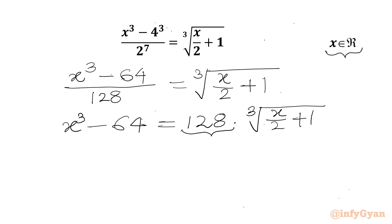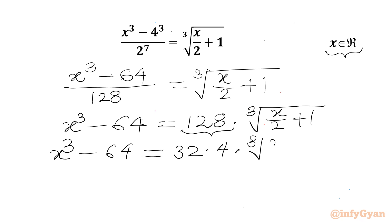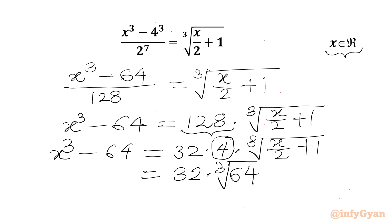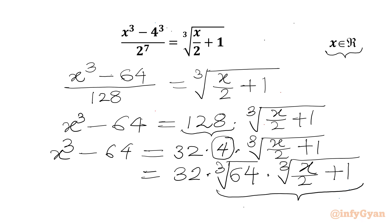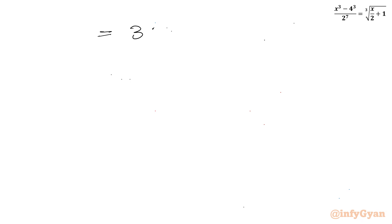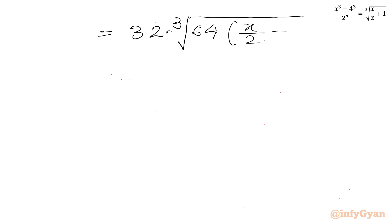Now we can factor. x cubed minus 64 stays as is. I can write 128 as 32 times 4, and then we have the cube root of (x over 2 plus 1). Now this 4 we can write as the cube root of 64, and then we have the cube root of (x over 2 plus 1). We can club these two radicals, so I can write 32 times the cube root of 64 times (x over 2 plus 1). The left hand side is x cubed minus 64.